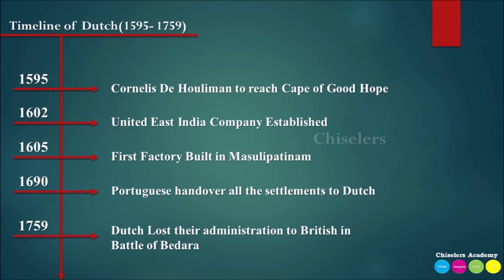Looking at the timeline of the Dutch: In 1595, the first expedition crossed the Cape of Good Hope, led by Cornelis de Houtman. In 1602, the United East India Company of Netherlands was formed. In 1605, the first factory was established. In 1690, Pulicat became the main trading center. In 1759, the Battle of Badara took place.